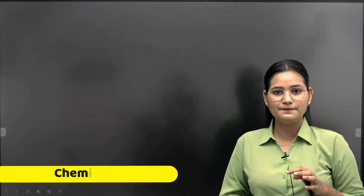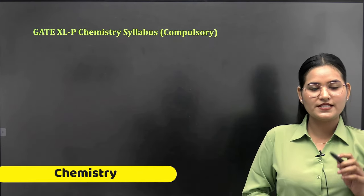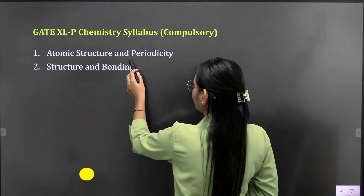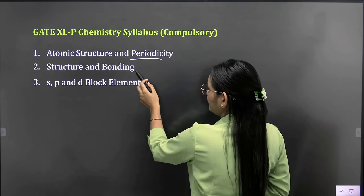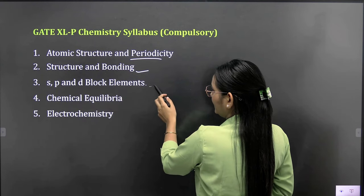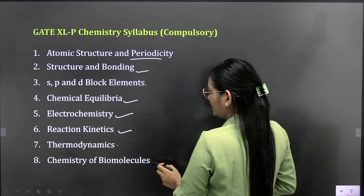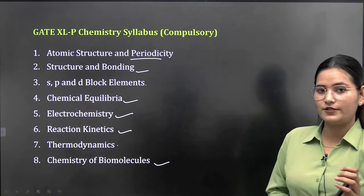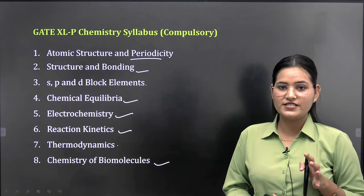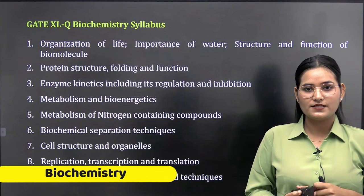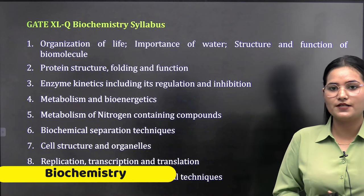Coming to the syllabus of chemistry. You will study atomic structure and periodicity, structure and bonding, s-p-d block elements, chemical equilibrium, electrochemistry, reaction kinetics, thermodynamics, and chemistry of biomolecules. Total eight chapters you have to cover in chemistry.